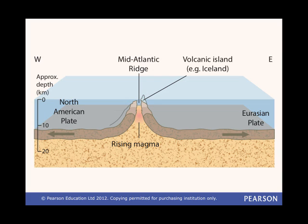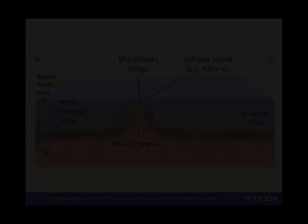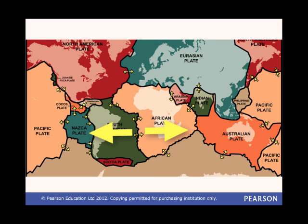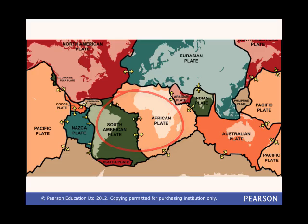A constructive plate boundary is where new crust is being created. A good example is the constructive boundaries between the Eurasian plate and the North American plate, or between the South American plate and the African plate. These are pushing these continents apart. You can see from the shape of their coastlines how Africa and South America once fitted together.